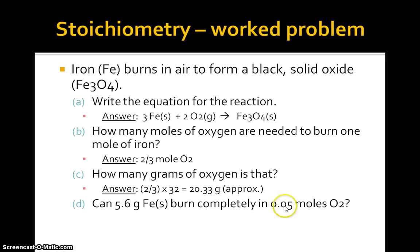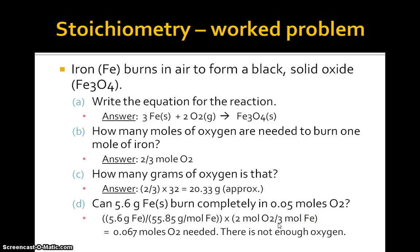So let's do that. I set it up where in this part here all I'm doing is calculating how many moles of iron I have, and over in this part I'm using the stoichiometric ratio of oxygen to iron, 2/3. So what do I get? 0.067. Well that's a number greater than 0.05, so no, there's not enough oxygen.